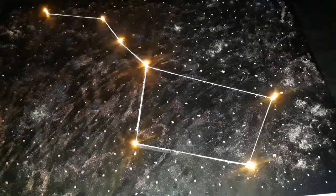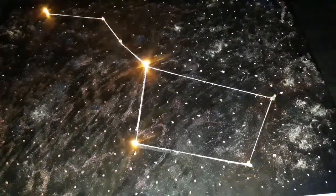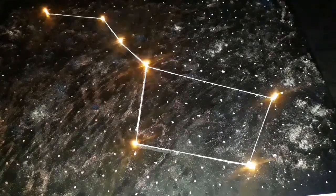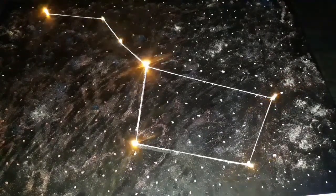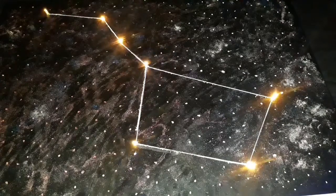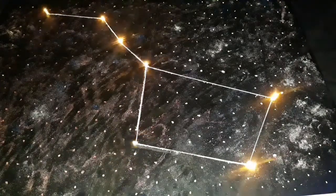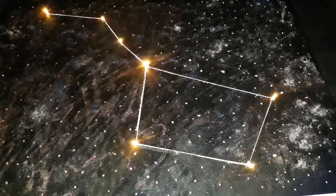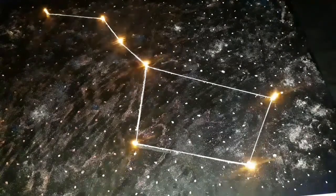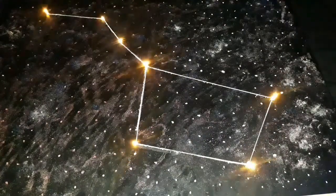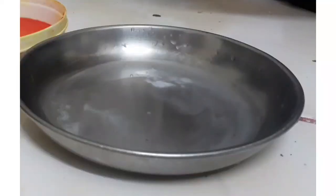Let's start making the Big Dipper. It's a part of Ursa Major. First of all, take a black thermocol chart. Draw the picture of Big Dipper using white marker. Now put some dots using white. Now we have to make a mixture of glue and water.